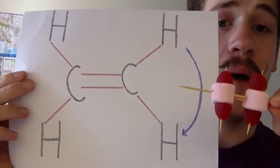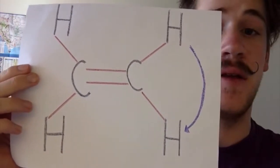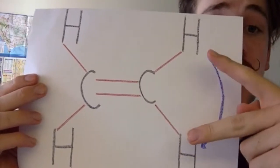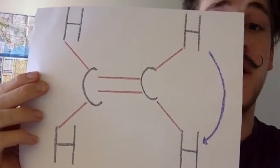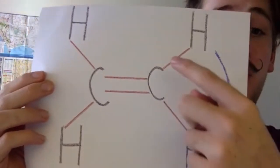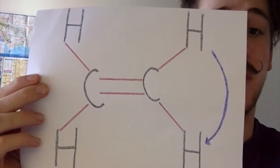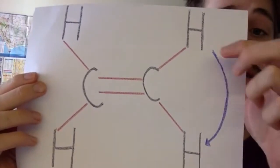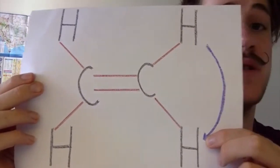Ethylene consists of two carbon atoms and four hydrogen atoms. The carbon atoms are bonded together by a double bond, with two hydrogen atoms bonded to it. This makes ethylene an alkene. Carbon atoms have four valence electrons, which allows this bonding to occur. The functional group of the double bond represents a trigonal planar angle of 120 degrees.